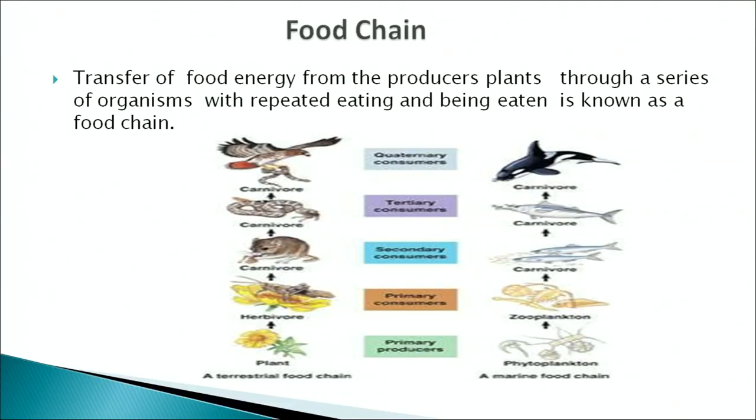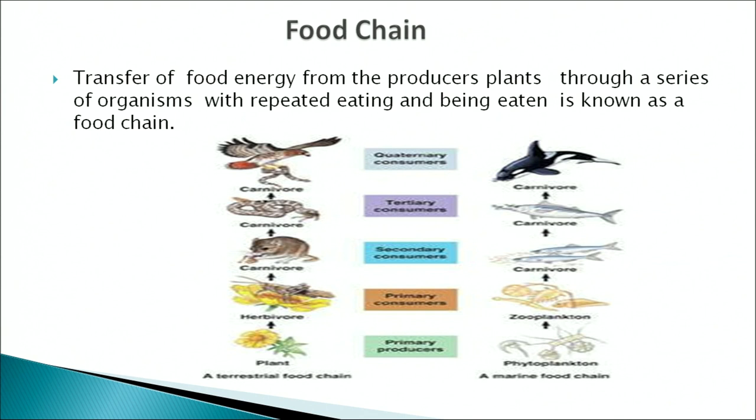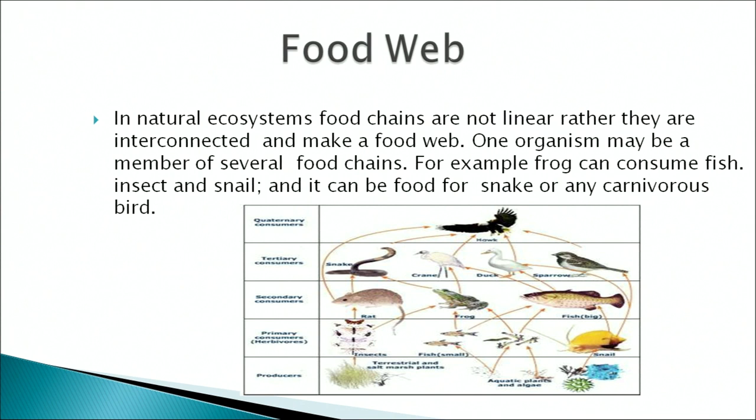A food chain is the transfer of food energy from the producer plants through a series of organisms with repeated eating and being eaten. Each step in a food chain is known as a trophic level. The trophic levels are: autotrophs at the first trophic level, herbivores at the second, and carnivores at subsequent levels. There is a limited number of steps in a food chain, and these are shown with aquatic and terrestrial examples.